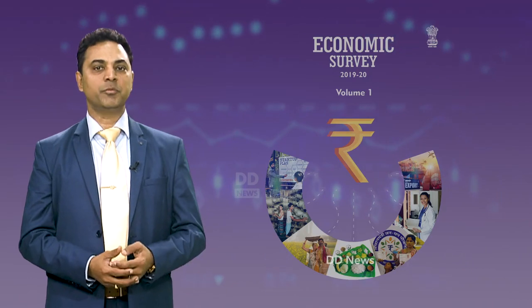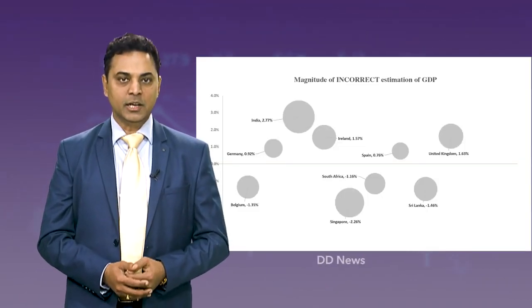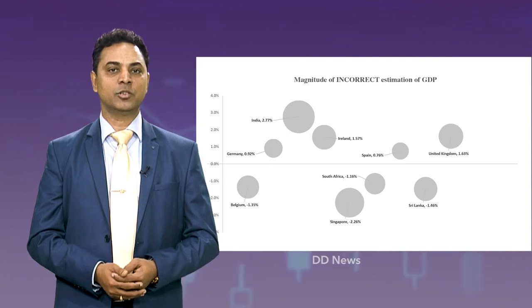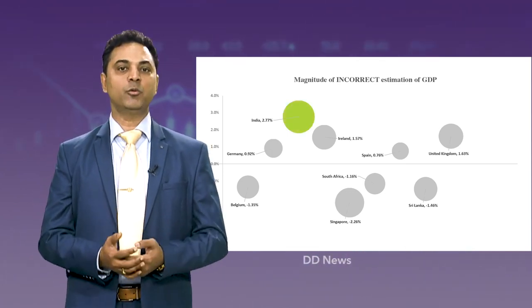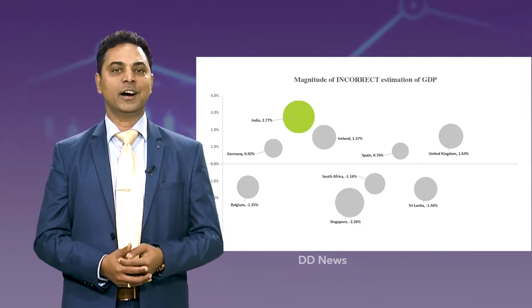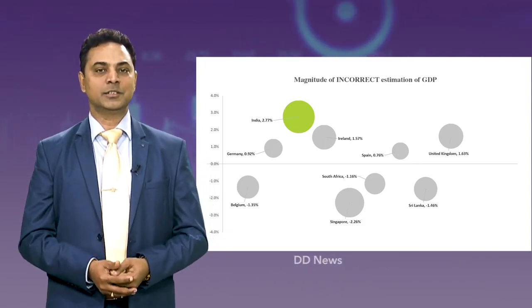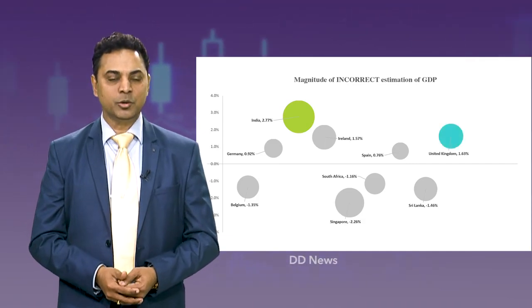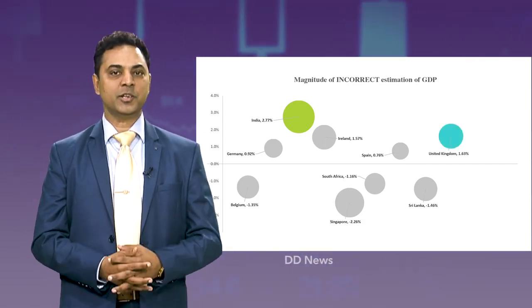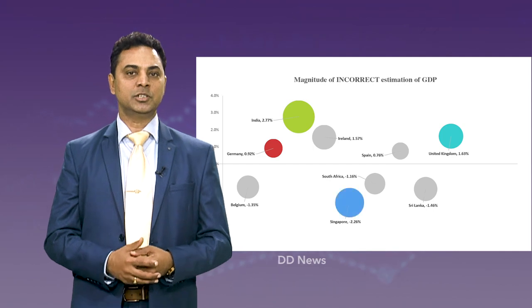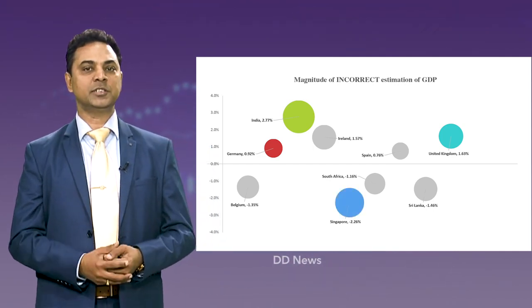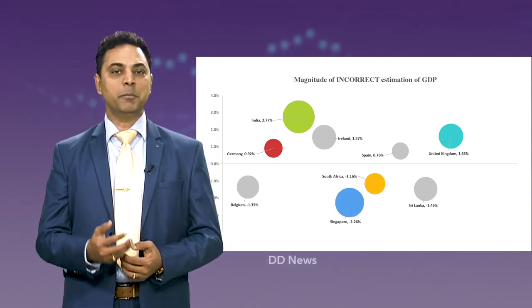The chapter finds no evidence of misestimation of India's GDP growth. It shows that in a model where India's growth rate is overestimated by 2.7%, 51 out of 95 countries are incorrectly estimated. This includes UK by plus 1.6%, Germany by plus 1%, Singapore by minus 2.3%, and South Africa by minus 1.2%.